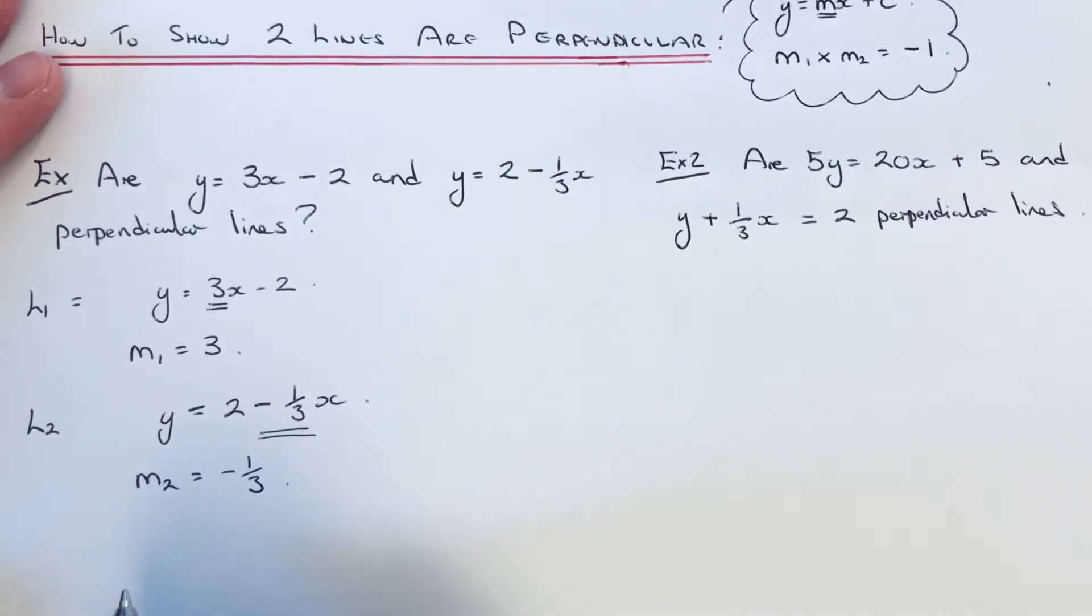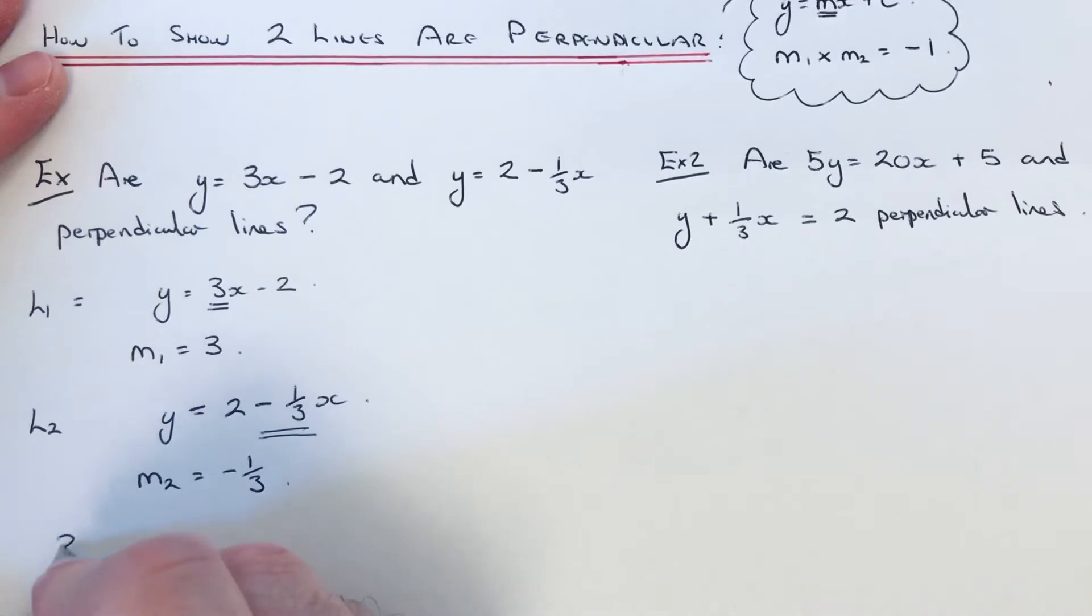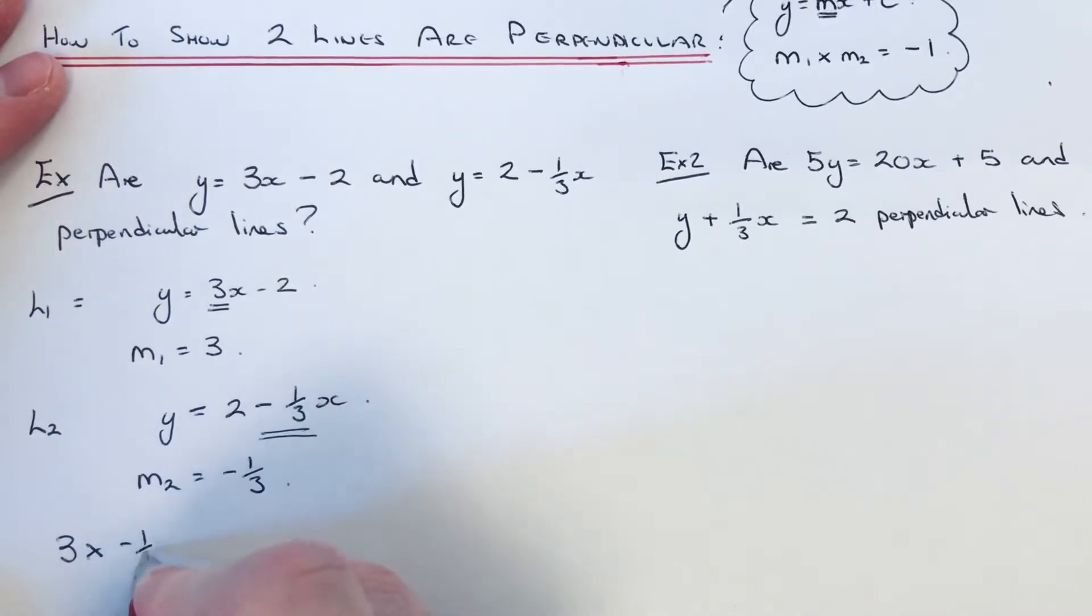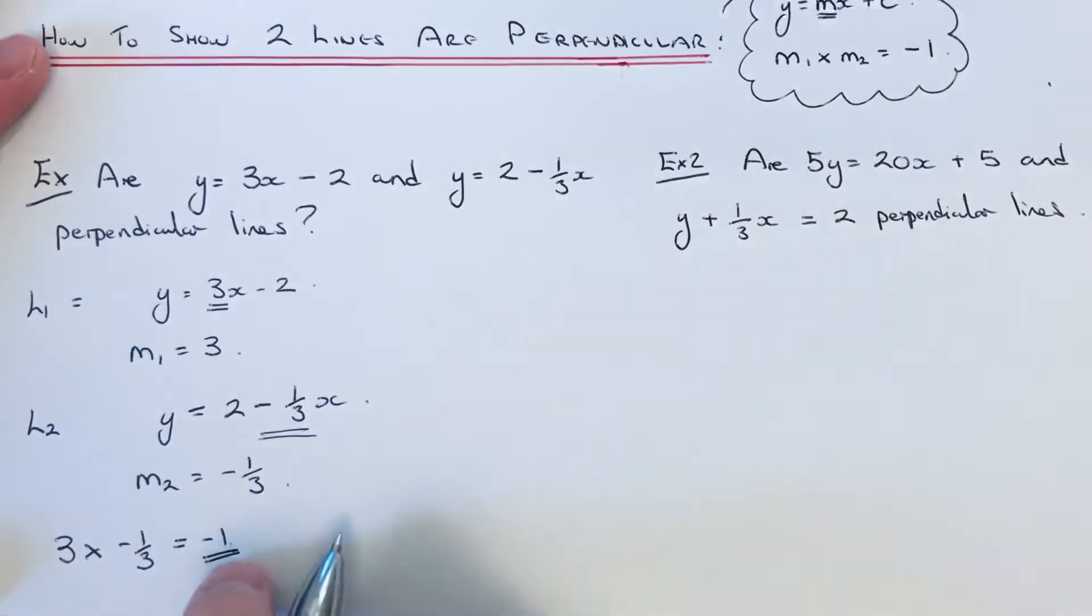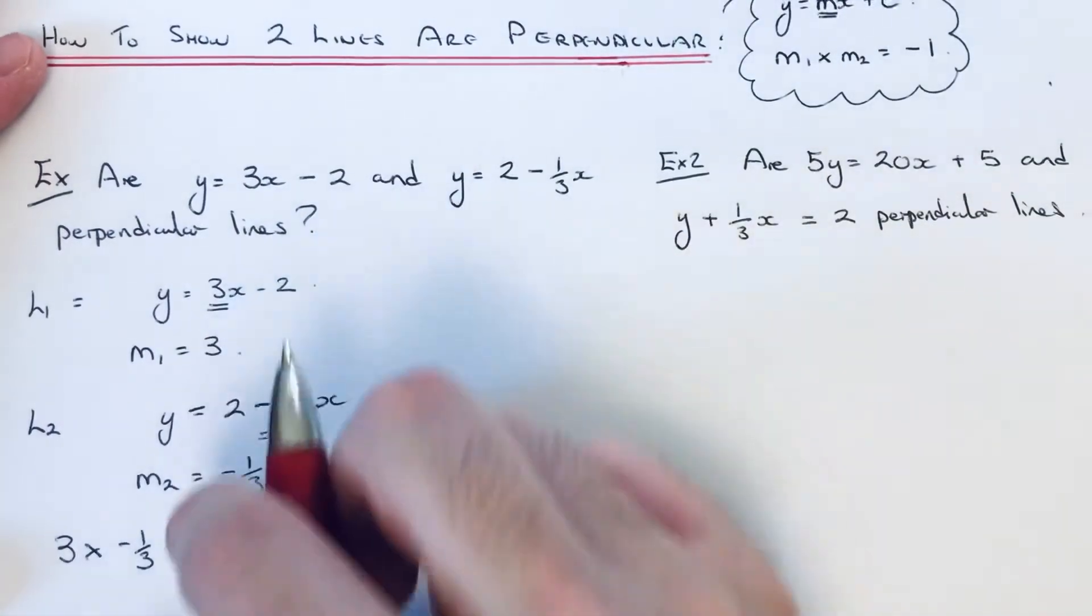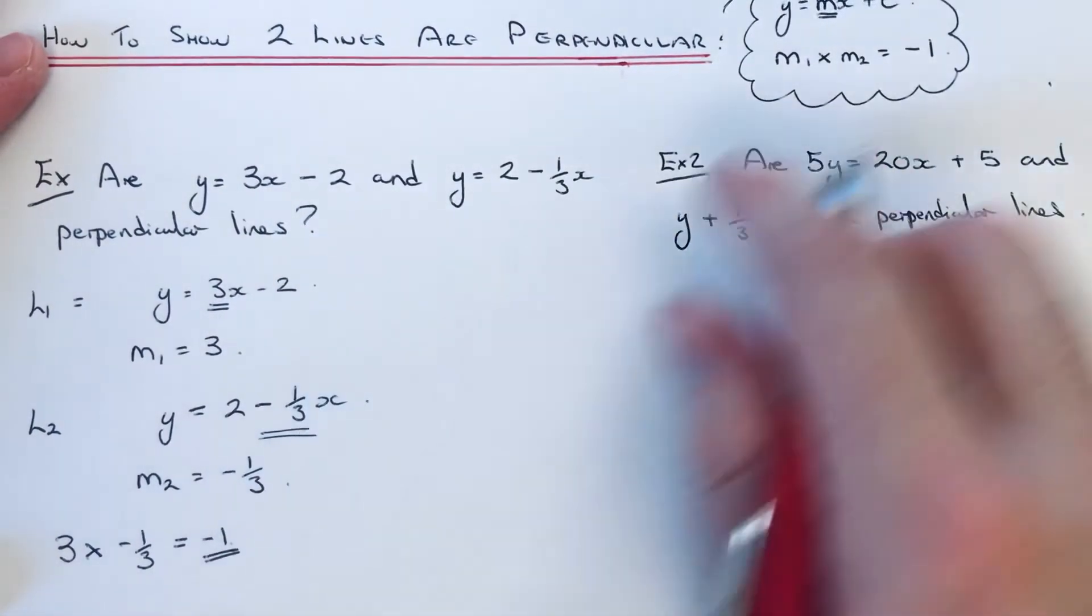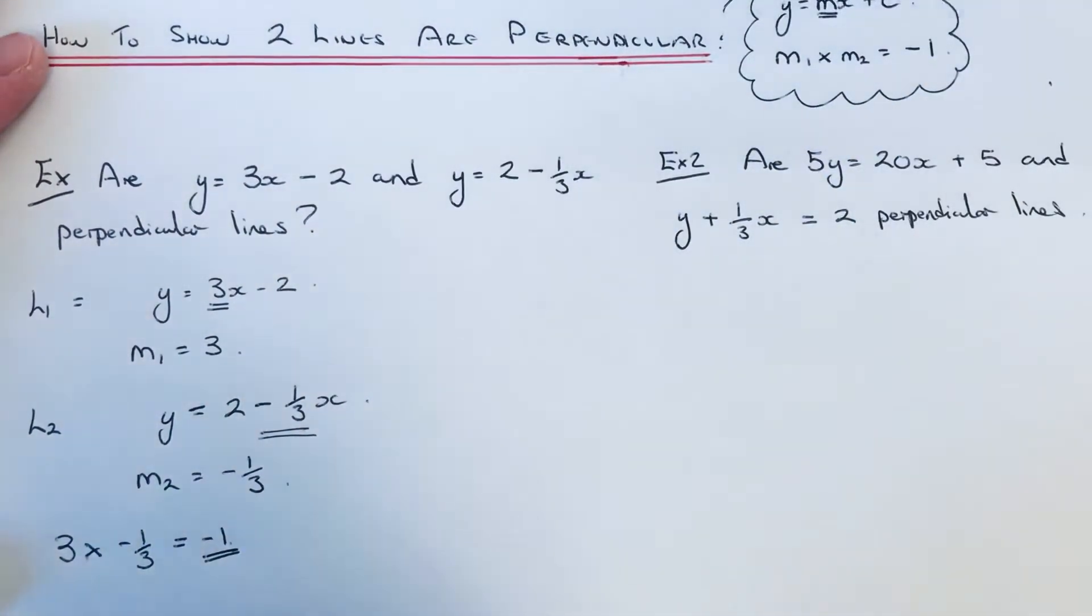So we just need to now multiply these two numbers together. So 3 times minus one third equals negative 1. So since we've multiplied the two gradients together and it's given us minus 1, then the two lines are going to be perpendicular.